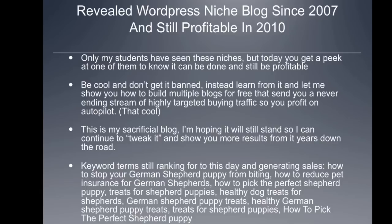This is going to be my sacrificial blog — I'm throwing it out there so everybody can see it, but I'm hoping you'll let it stand so I can continue to tweak it and show you more results. The market is the German Shepherd niche. Keywords you can search for right now include: 'how to stop your German Shepherd puppy from biting,' 'how to reduce pet insurance for German Shepherds,' 'how to pick the perfect German Shepherd puppy,' 'treats for German Shepherd puppies,' and 'healthy dog treats for German Shepherd puppies.' In module 3, I'll show you exactly what this blog looks like and the money being made from it.